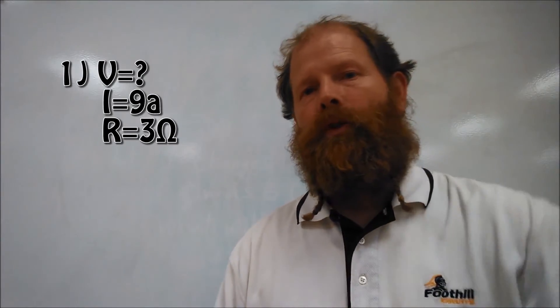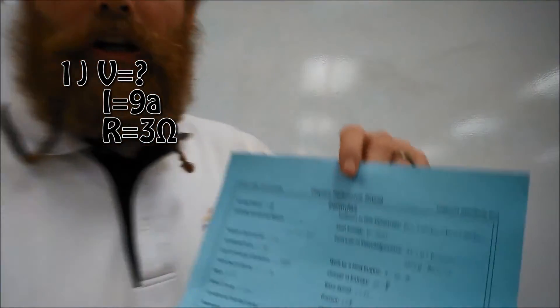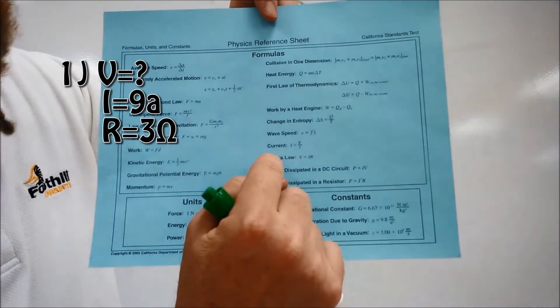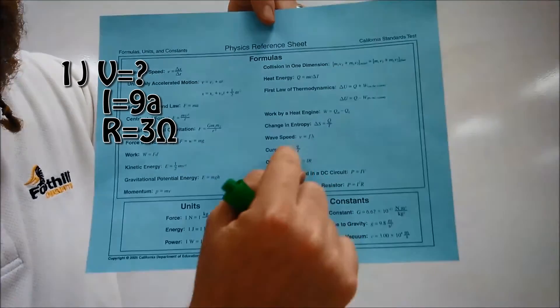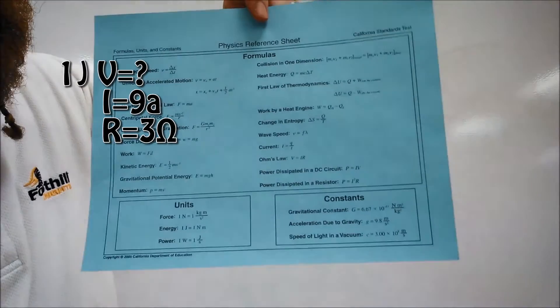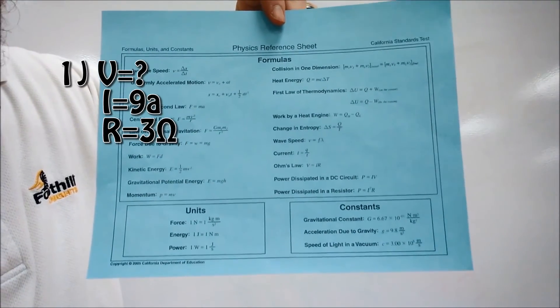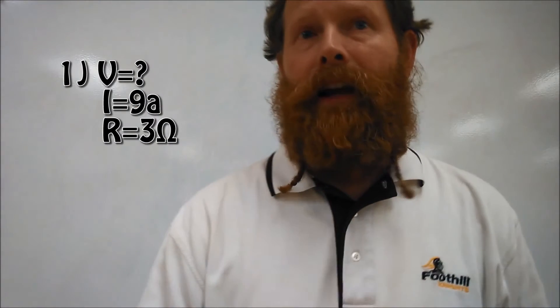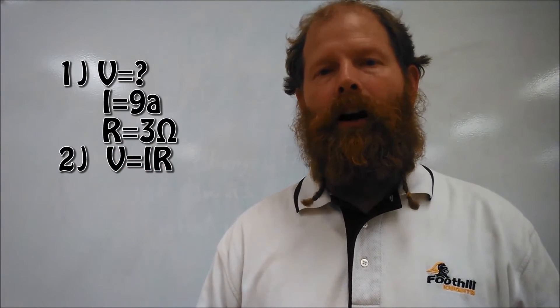So now we have to figure out what equation we're using. So we come to the blue sheet. We recognize we have to find one that has V, I, and R. So we find Ohm's Law down here on the bottom right. So Ohm's Law, V equals IR. So then we write down that. Step two, V equals IR.